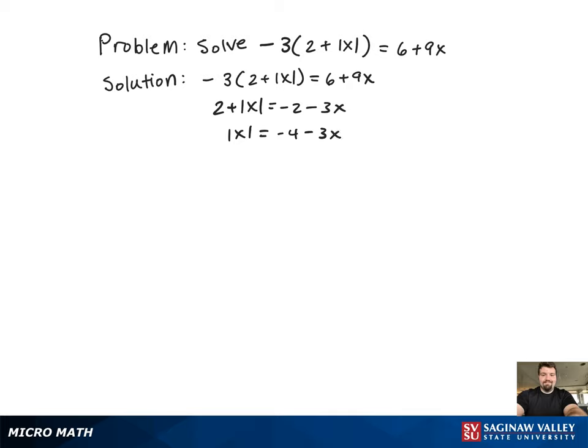Now that the absolute value is solved for, we're going to set x equal to negative 4 minus 3x, and we're also going to set it equal to the negative of the quantity negative 4 minus 3x.